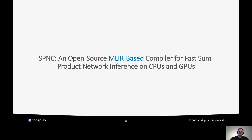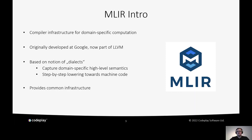Next part is MLIR. MLIR is a compiler infrastructure for domain-specific computation, originally developed at Google, but now part of the LLVM framework. The whole of MLIR is based on the notion of dialects, which allows us to capture domain-specific high-level semantics — in our case, the semantics of sum-product networks — and then do a step-by-step lowering towards executable machine code. MLIR also provides a lot of common infrastructure like pass managers and pattern matching that we can use to build our compiler.